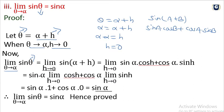Sin alpha and cos alpha are constants. Limit as x tends to 0 of cos x plus cos alpha times limit as x tends to 0 of sin x. Now, sin x as x tends to 0 is 0, and cos 0 equals 1. So sin alpha into 1 plus cos alpha into sin 0 equals sin alpha into 1 equals sin alpha. Therefore limit as theta tends to alpha of sin theta equals sin alpha.